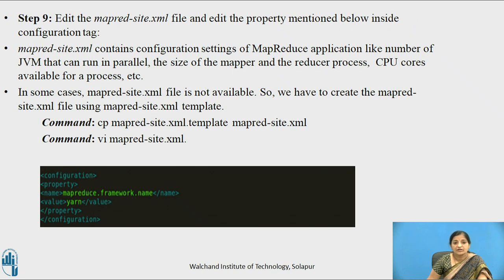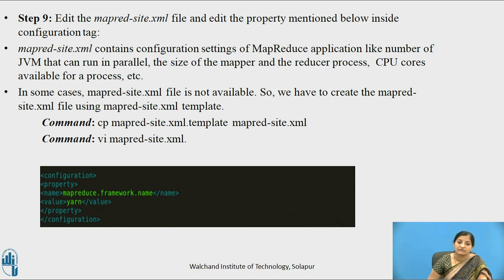Then we edit the MapReduce file, that is mapred-site.xml. We edit the property mentioned in the configuration tag as shown in the snapshot. This file contains configuration settings of the MapReduce application, like the number of JVMs that can run in parallel, the size of mapper and reducer processes, CPU cores available for a process, etc. In some cases this file may not be available, so we have to create it using the mapred-site.xml template.